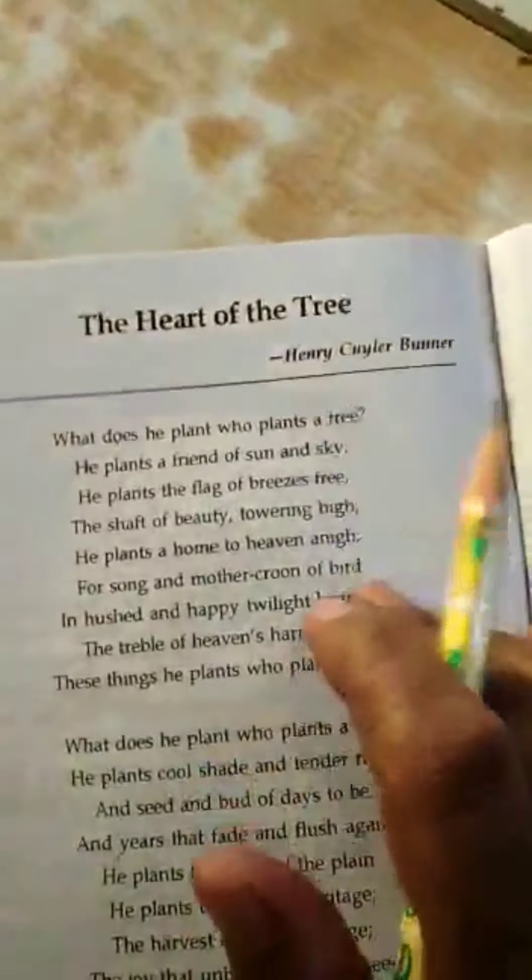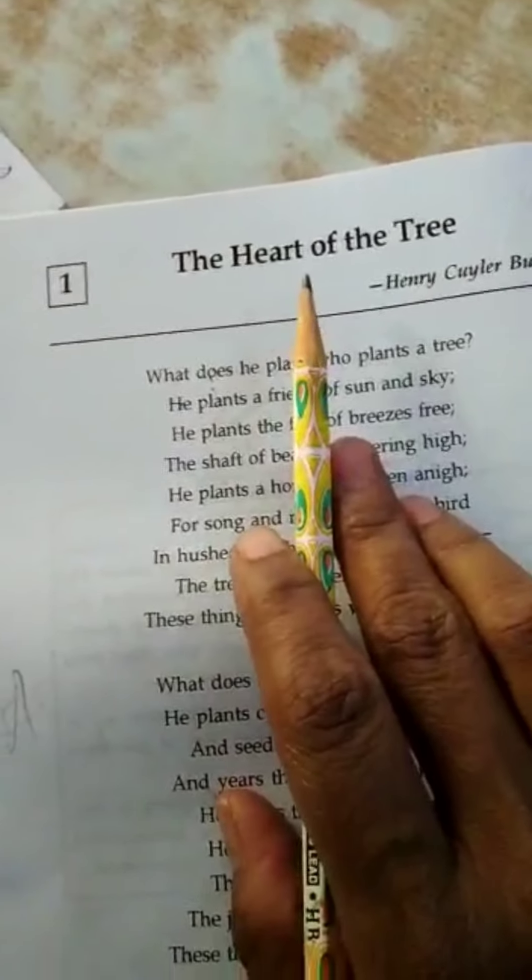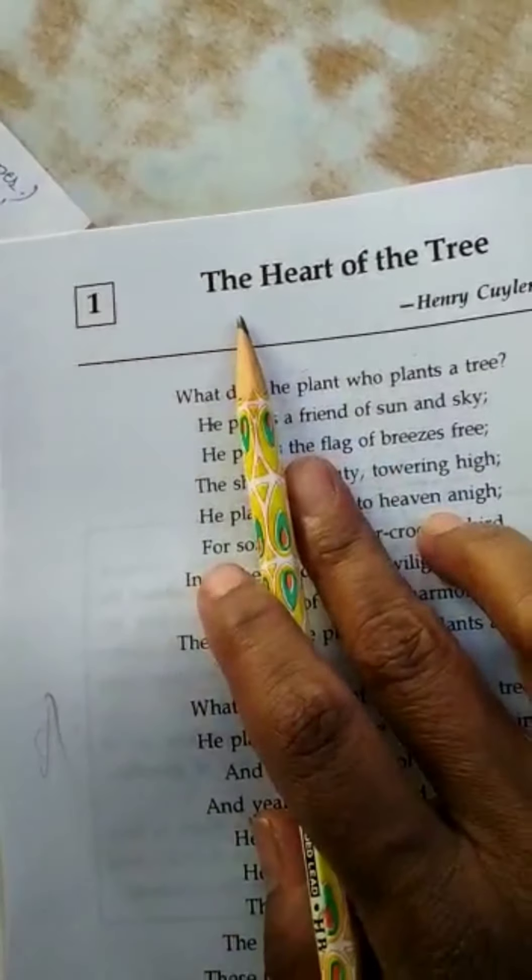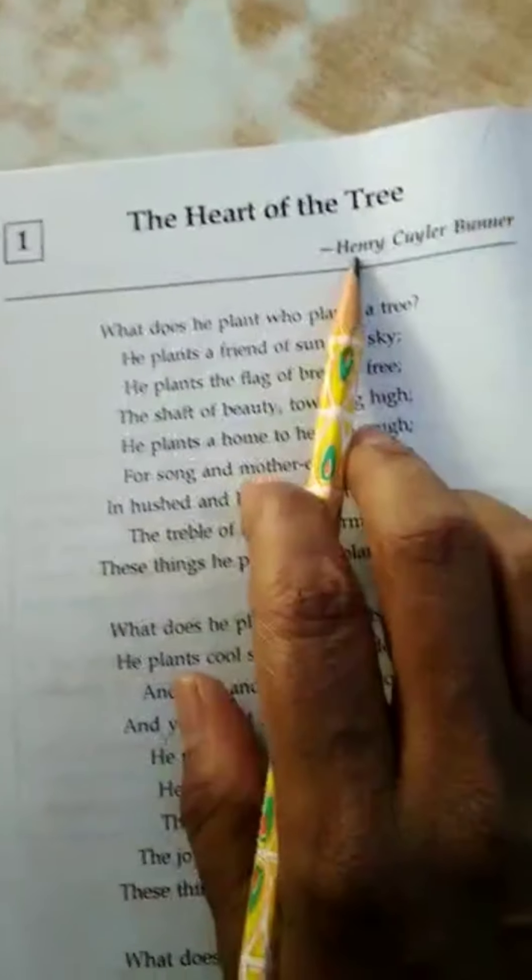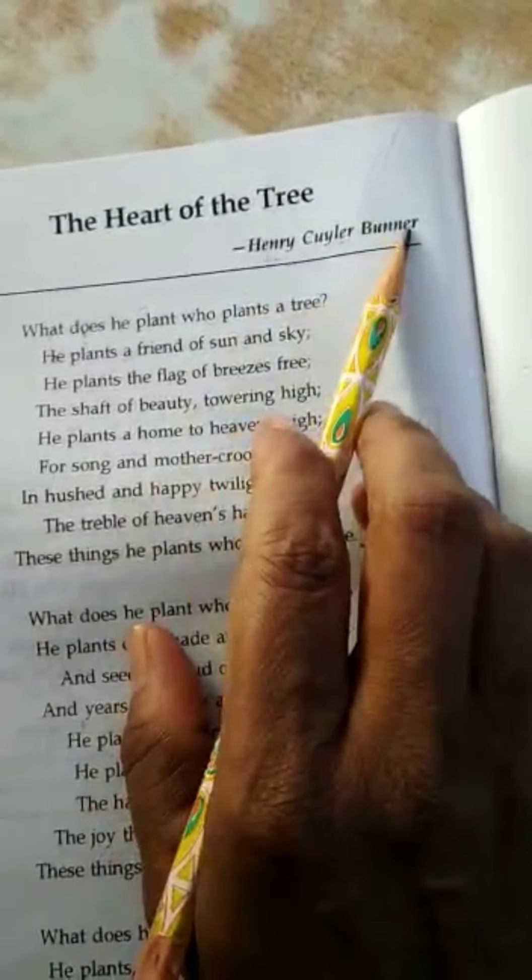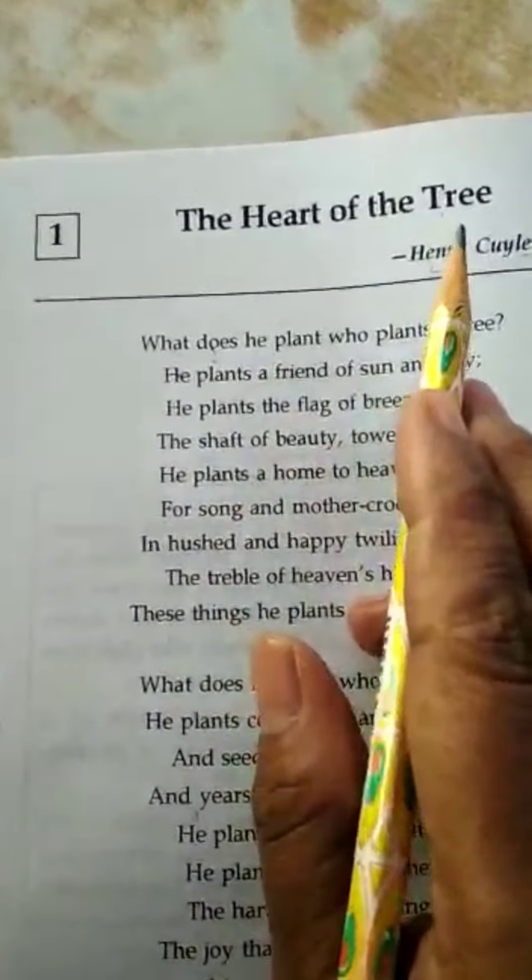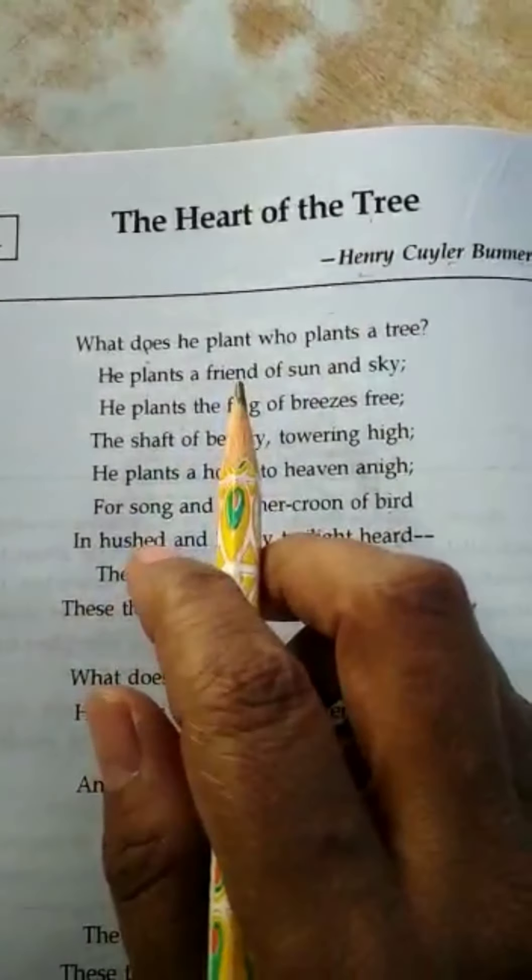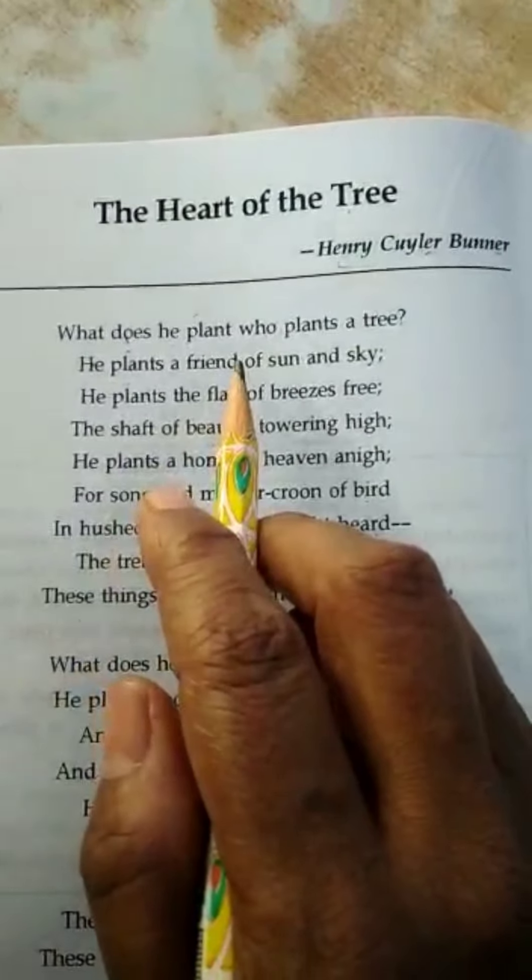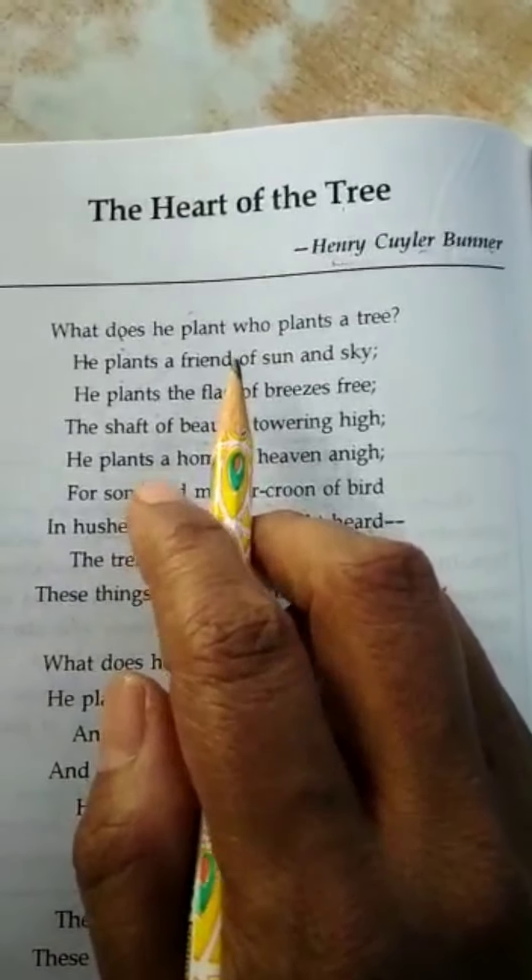Ladies and gentlemen, my name is Sri Ram Singh and today I am going to teach you a poem that is The Heart of the Tree. It has been composed by Mr. Henry Cuyler Bunner. Before I start the teaching, I would like to ask you a question that is the definition of poem. Do you understand what the poem is?